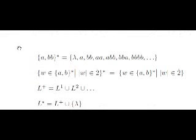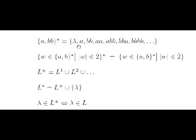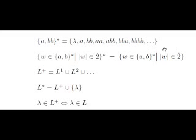Let's see one last example. Consider the language containing the words A and BB. In this case, after applying the star operation, we obtain lambda, A, BB, AA, ABB, BBA, BBB, and so on.